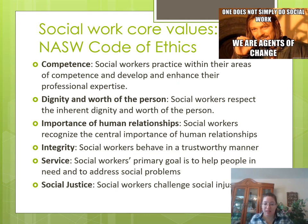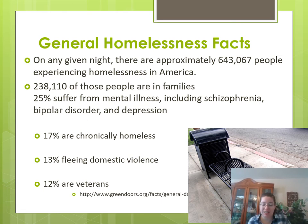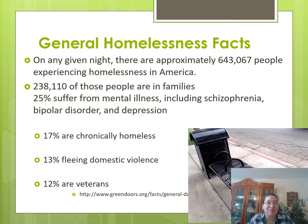The U.S. has a huge homelessness population — approximately 643,000 on any given night. Most of these are in families. Almost 20% are chronically homeless, 13% are fleeing domestic violence, and 12% are veterans. There's also an active movement known as hostile architecture to prevent the homeless from being in public spaces — things like bars on benches so they can't lie down. The response to homelessness is not to decrease homelessness; it's to make it less visible to the public.